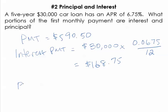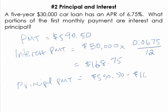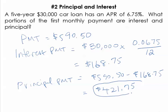What's left over pays down principal. So we just take the difference of the payment and the portion that pays interest, which gives us $421.75 left over to pay down principal.